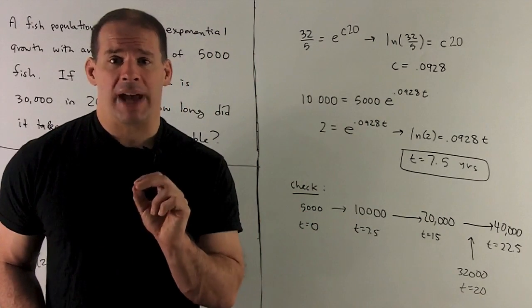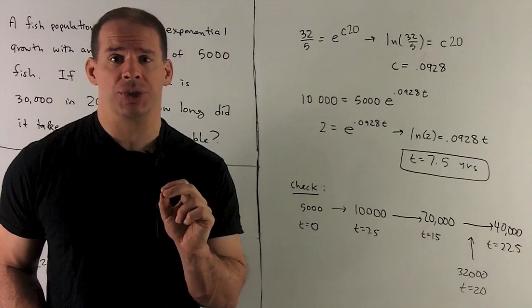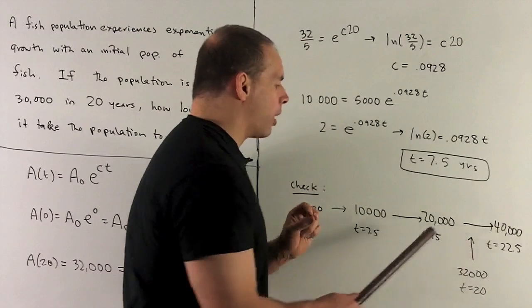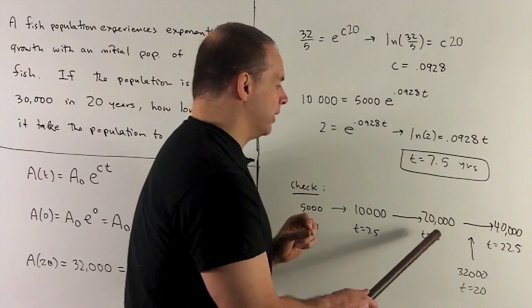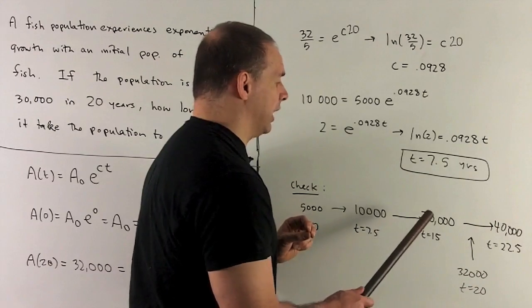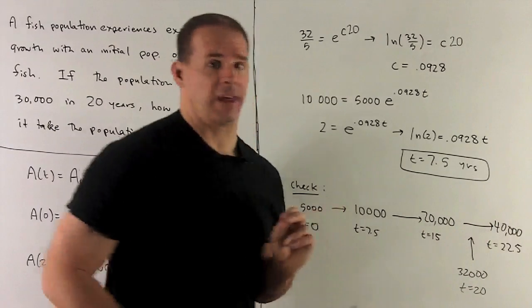Then I let one more pass, which gets me to 22 and a half years. That's going to double to 40,000. So we know we're in the ballpark. Our 20 years is between 15 and 22 and a half, and our 32,000 is between 20,000 and 40,000.